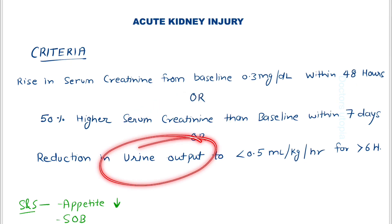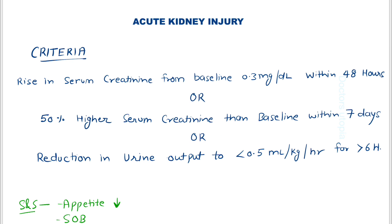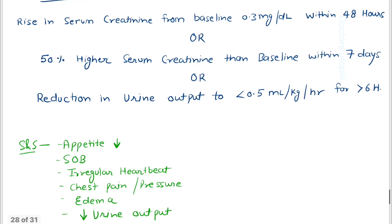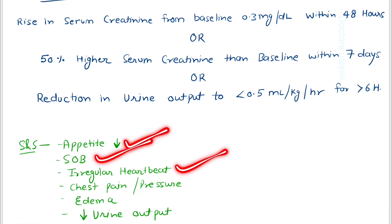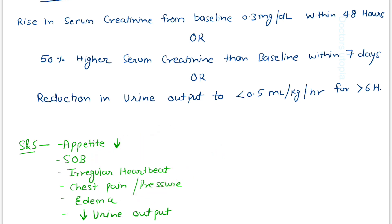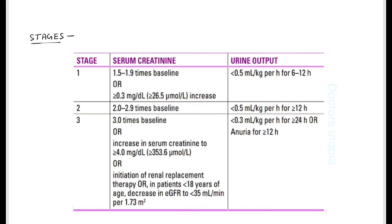The higher amount of creatinine and reduction in urine output will give some symptoms. The signs and symptoms are: decreased appetite, shortness of breath, irregular heartbeat, chest pain or pressure, periorbital or peripheral edema, and low urine output.